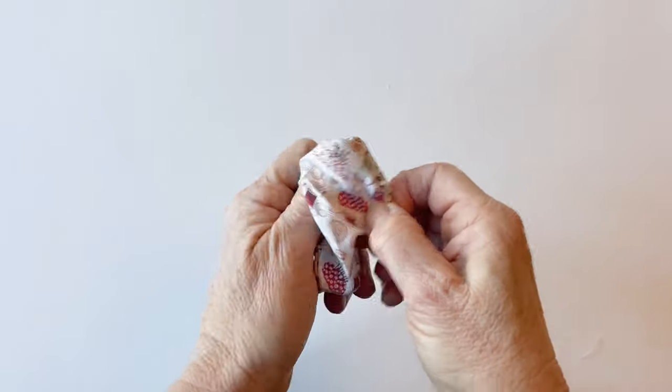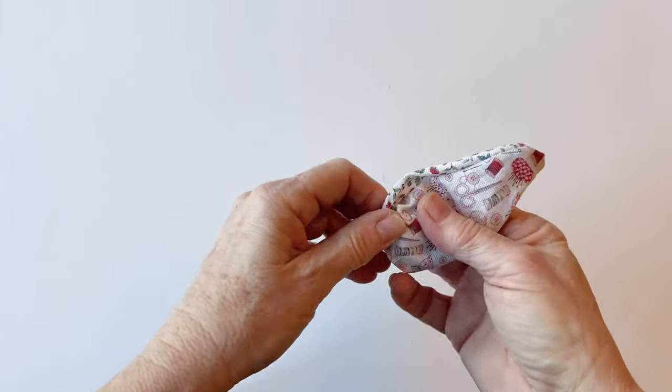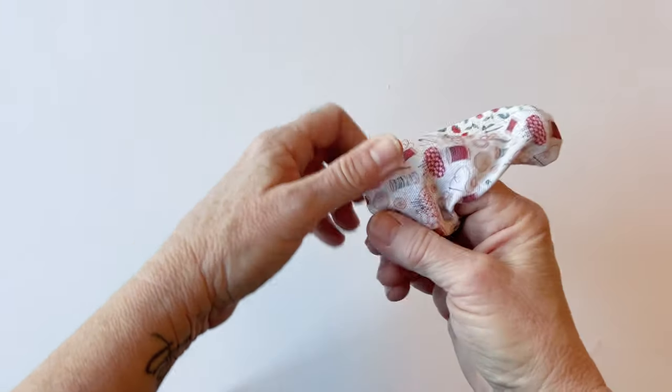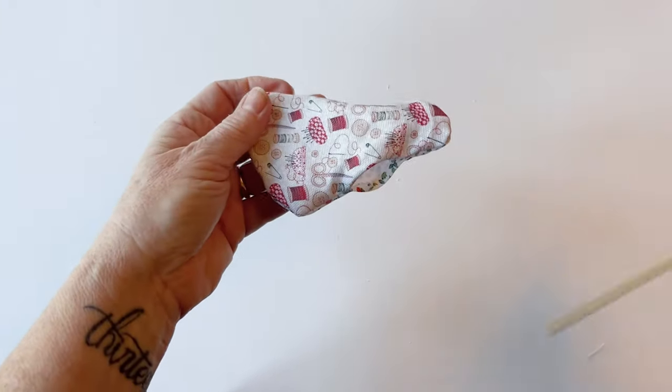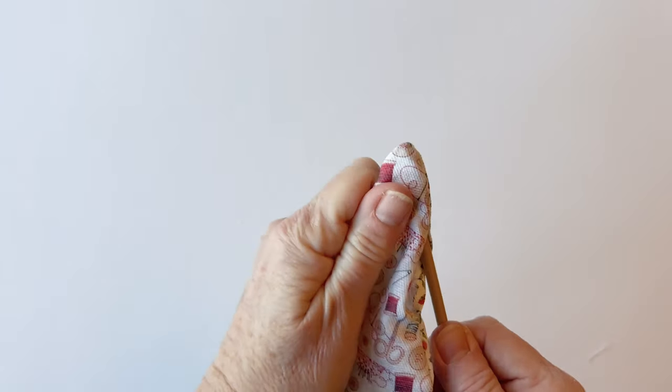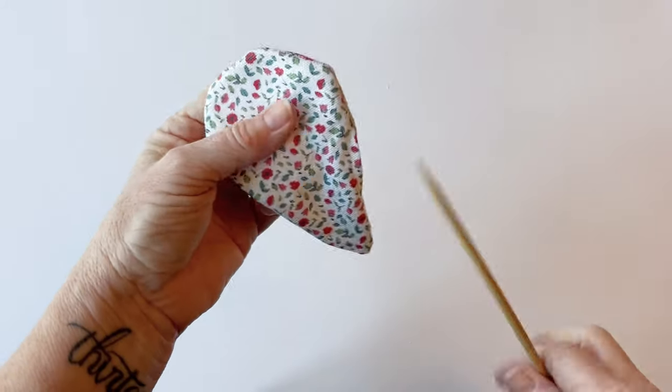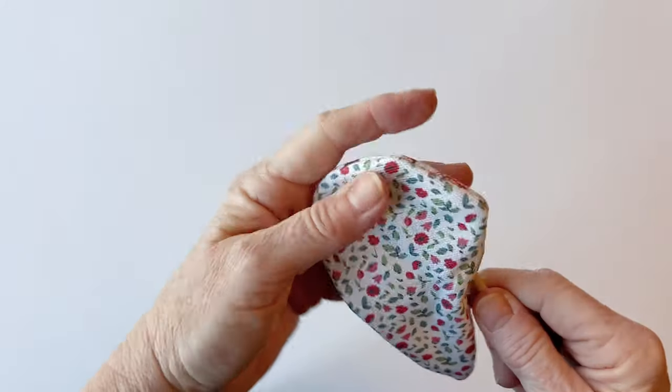Clip the seams and then turn it right sides out through the turning gap. Ease out all the corners and edges using a turning tool so that the seams lay right on the edges. Because you've trimmed the seams, you won't have too much bulk. Running your turning tool along the seams helps, and giving it a good press afterward will get everything nice and flat.